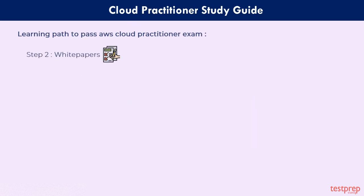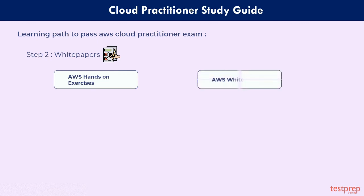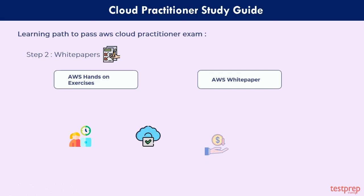Step 2: White Papers. Now that you have finished your lessons, it is time to practice your learning with use cases, hands-on exercises, and to go through the AWS white papers, which include: Overview, Cloud Best Practices, AWS Pricing, and Support Plans.